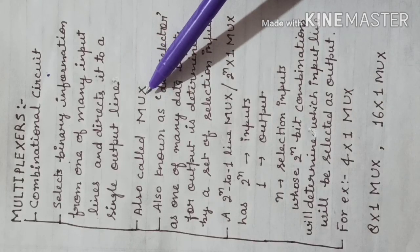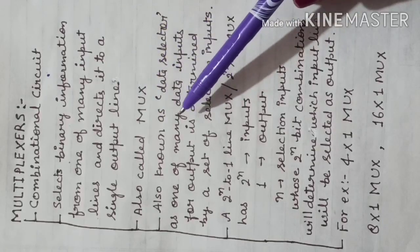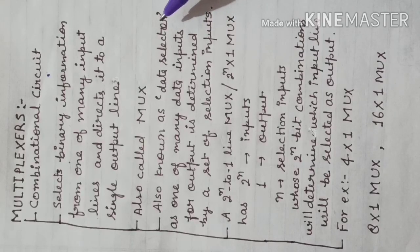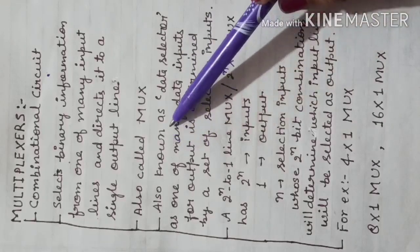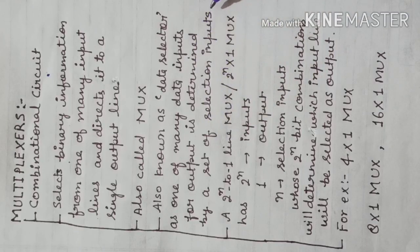We can write multiplexer in its shortened form as MUX. It is also known as data selector. Ye data selector bhi kehlata hai kyunki actually ye jo function perform karata hai woh data selection ka hi karata hai. It is performed by the logic of selection input. It is also known as data selector as one of many data inputs for output is determined by a set of selection inputs.